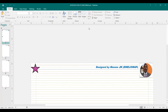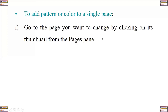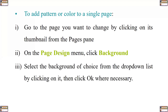You can also add a pattern or color to a page. If you want to add a pattern or color to a single page, go to the page you want to change by clicking on its thumbnail from the Pages pane. Then on the Page Design menu, click Background, select the background of your choice from the drop-down list by clicking on it, then click OK where necessary. The options include No Fill, Solid Fill, Pattern, Gradient Fill, or even a Picture.